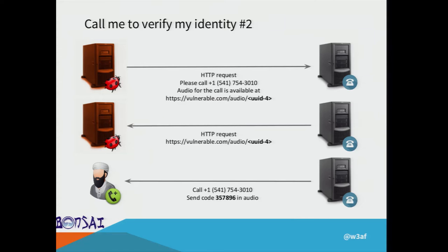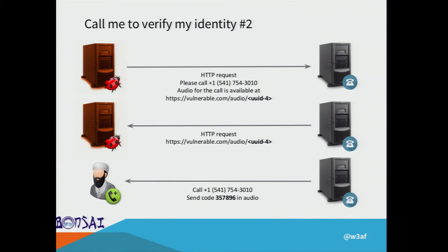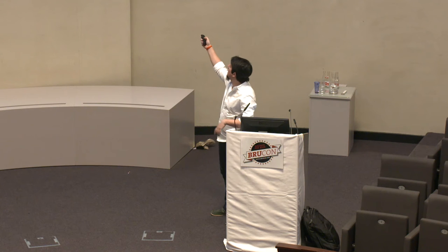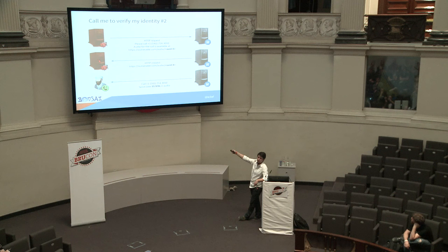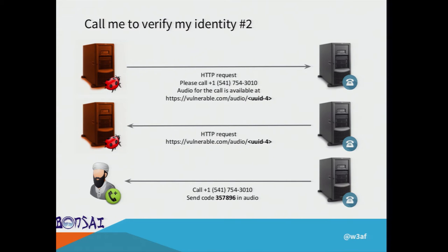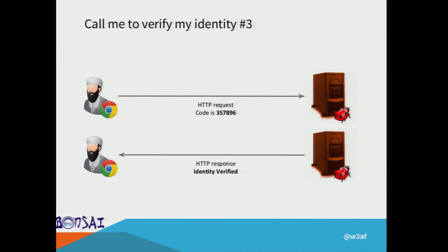The user requests phone number verification, and the vulnerable web application calls a software-as-a-service like Twilio to make the outgoing call. Twilio then performs an HTTP request back to the vulnerable web application to get the audio content for the call. Twilio makes the call, plays the audio with the code, the user enters the code, and identity is verified.